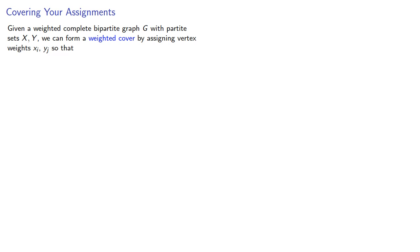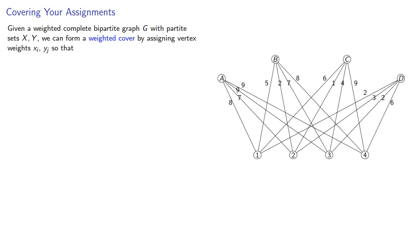Given a weighted complete bipartite graph G with partite sets X and Y, we can form a weighted cover by assigning vertex weights xi and yj so that the weight of an edge is less than or equal to the sum of the weights of the incident vertices.